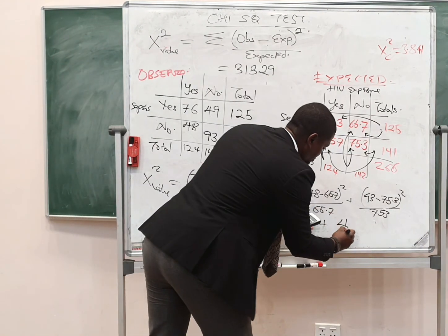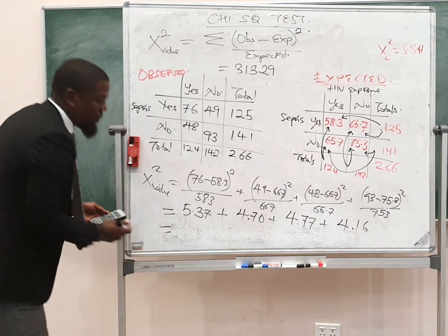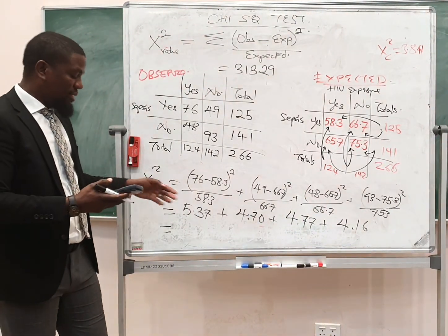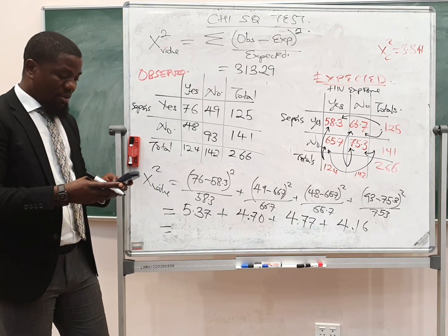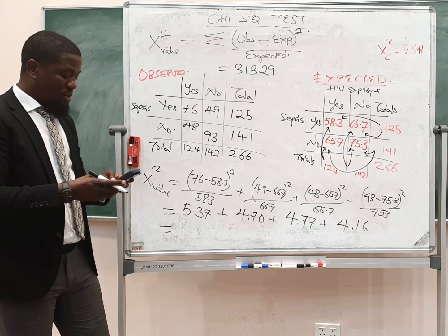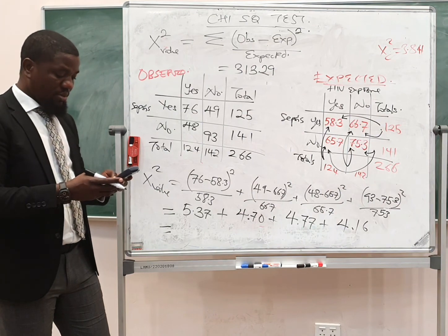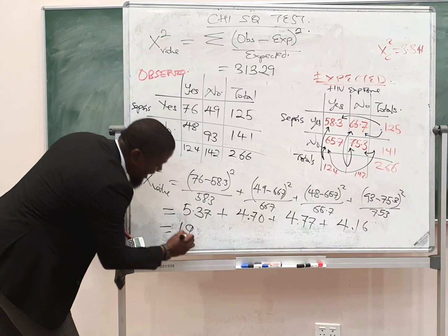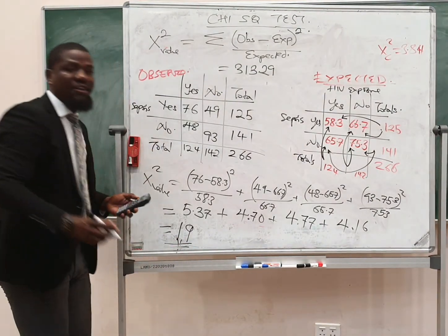So we do simple arithmetic by adding 5.37 plus 4.70 plus 4.77 plus 4.16. The chi value is 19. That is our chi value.